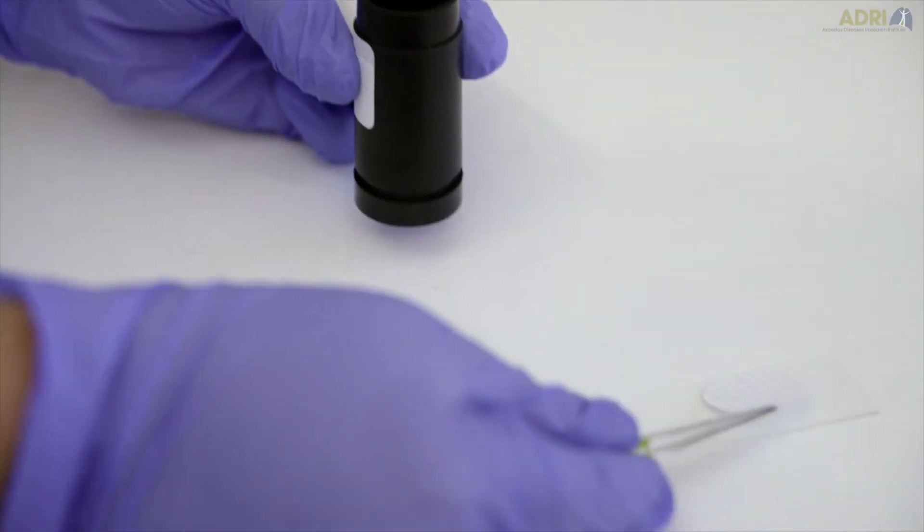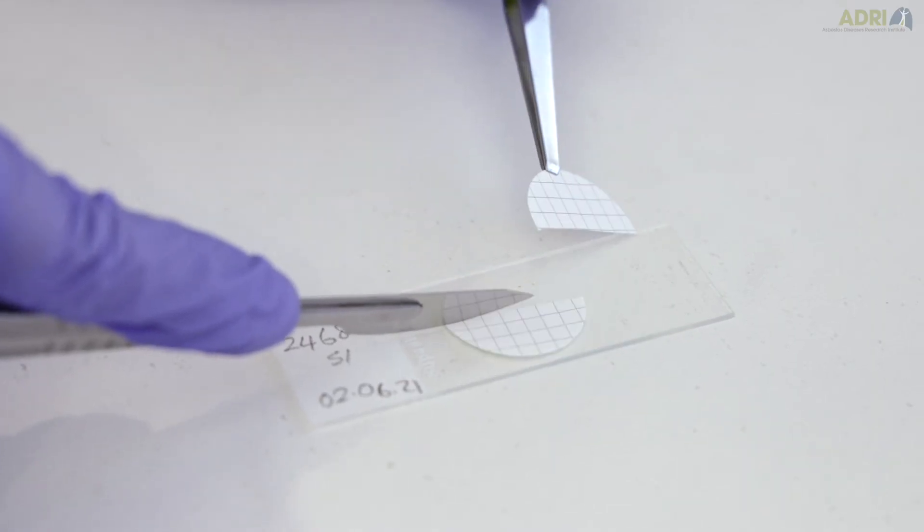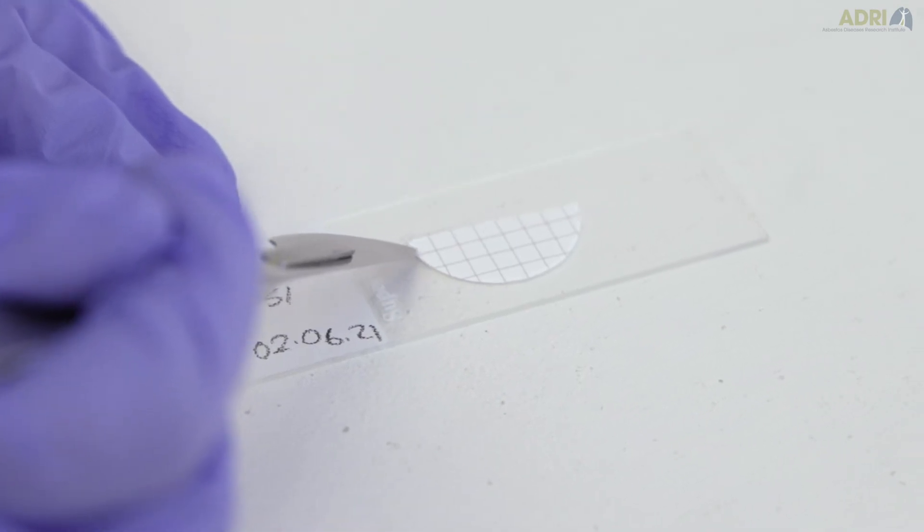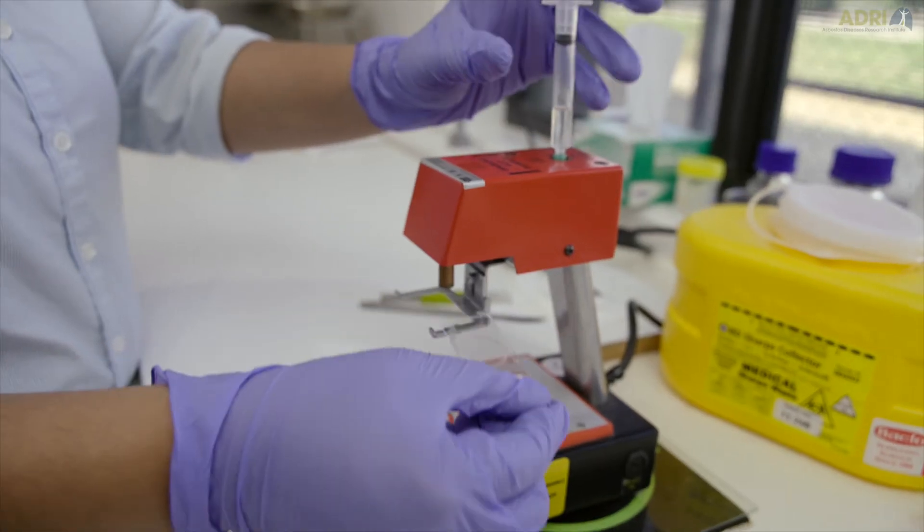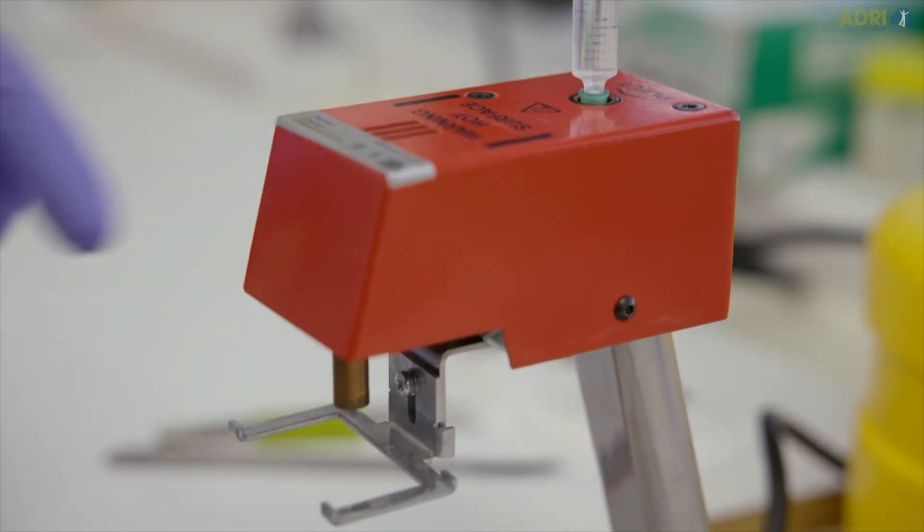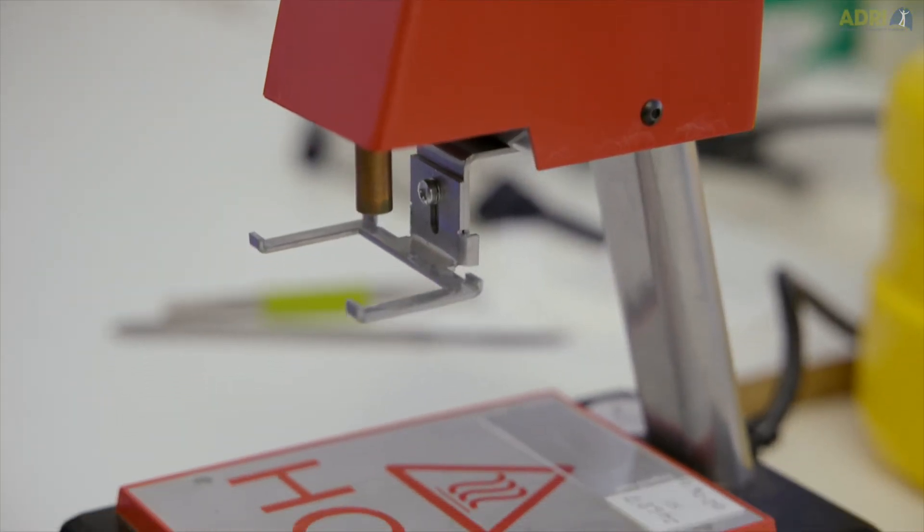That filter is then cut in half. Half the filter is placed back into its respective cow and the other filter is mounted onto the glass slide and it's vaporised and it dissolves the cellulose nitrate filter, which is opaque, into a clear membrane.